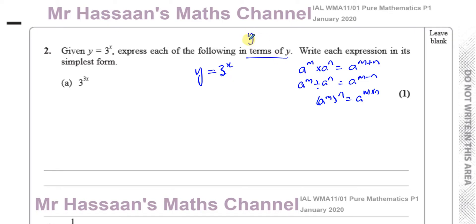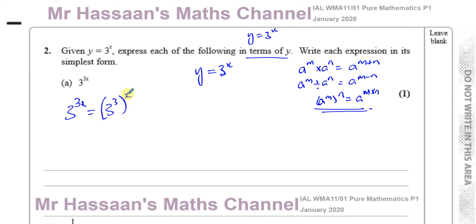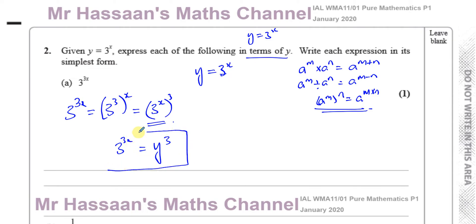It looks like that last law is what's happened here. We have to express things in terms of y, and y equals 3 to the power of x, so we need to express these expressions in terms of 3 to the power of x, then replace 3 to the power of x with y. Now, 3 to the power of 3x can be written as 3 to the power of x, raised to the power of 3, because you multiply the powers to get 3 to the power of 3x. This is the form we want — replacing 3 to the power of x with y gives us y cubed. So 3 to the power of 3x equals y cubed — that's the answer for part a.